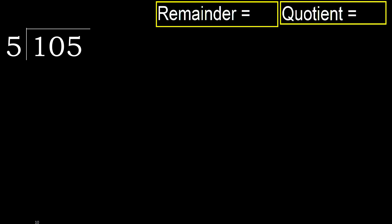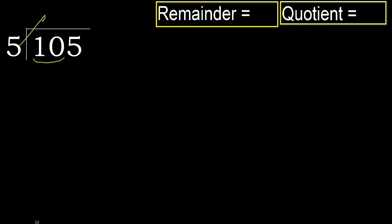105 divided by 5. 1 is less, therefore next. 10 is not less, therefore with 10. 5 multiply by which number is nearest to 10, but not greater.